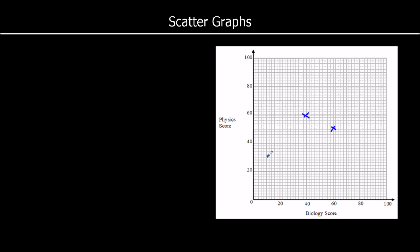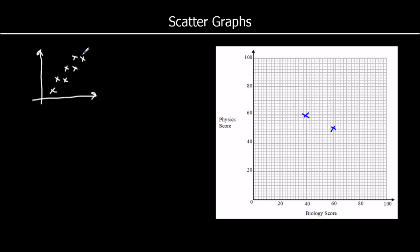We use scatter graphs to look at the correlation between two things — so the relationship, in this case, between biology scores and physics scores. When we talk about correlation, we can say we've got a positive correlation if as one goes up, the other one goes up as well. So if as the biology scores go up, the physics scores go up as well, we'll say it's a positive correlation.